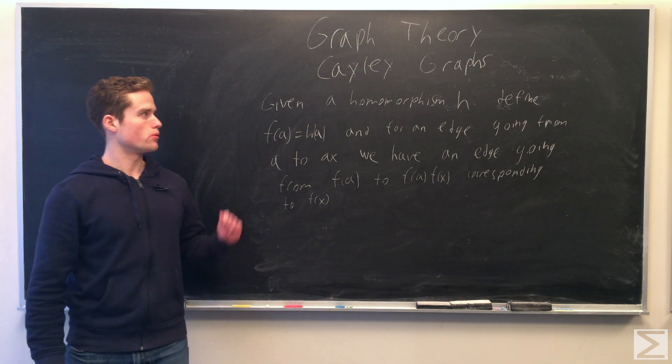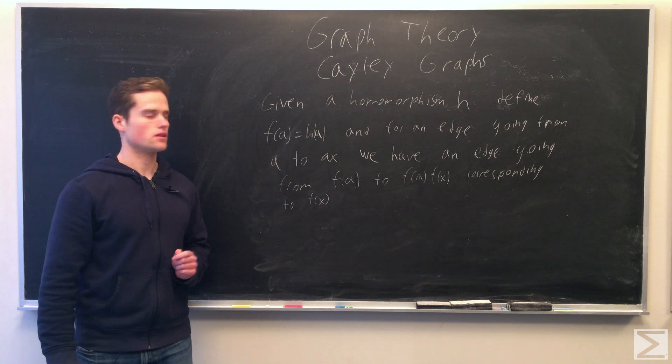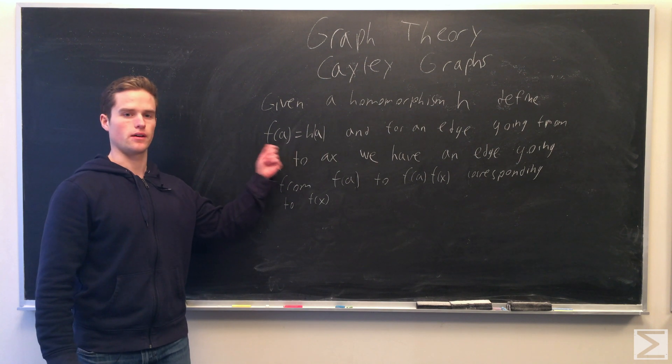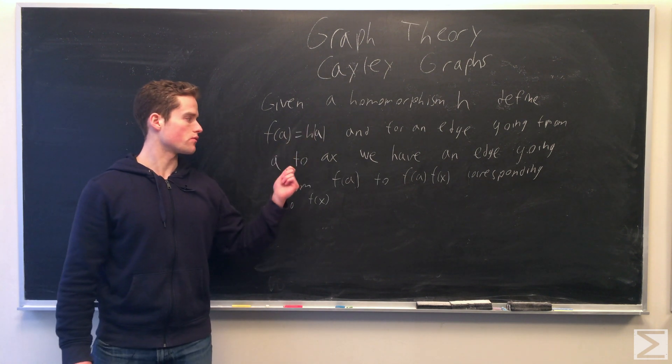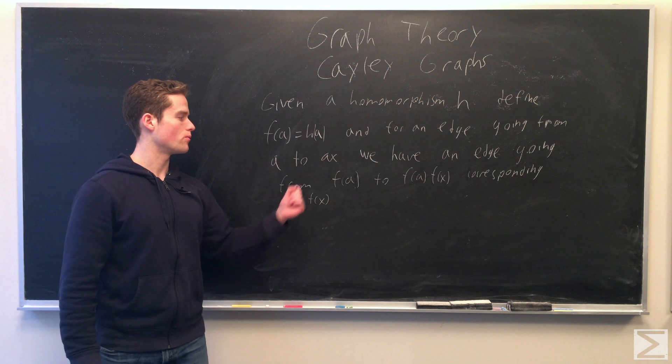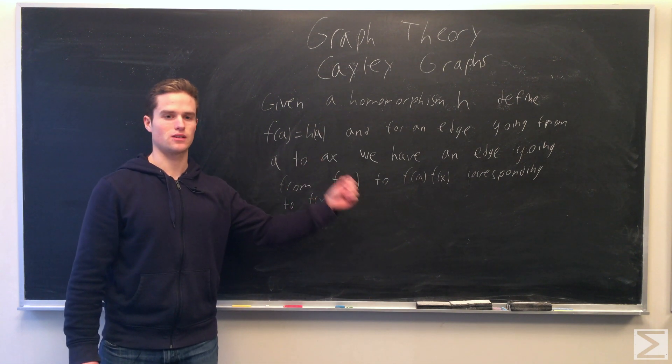So if we're given a homomorphism H, define F of A equals our graph map, the function of the vertices. Some A vertex F of A will equal H of A. For an edge going from A to AX, we have an edge in the image F of A going to F of A, F of X.